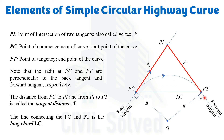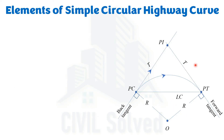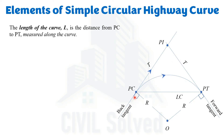The distance between PC and PT measured in a straight line is named the long chord, represented with capital LC. The distance measured along the curve between PC and PT is called the length of curve.